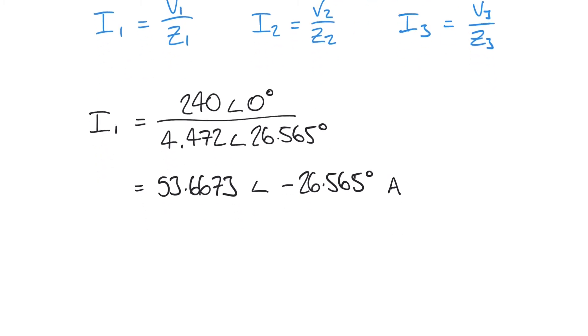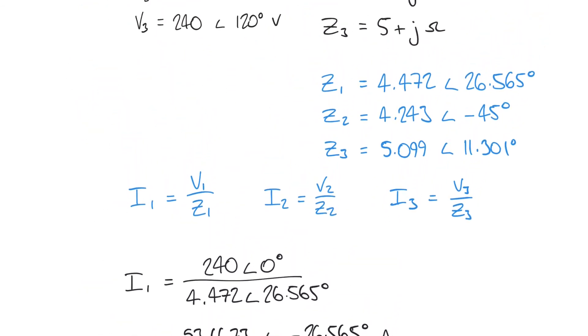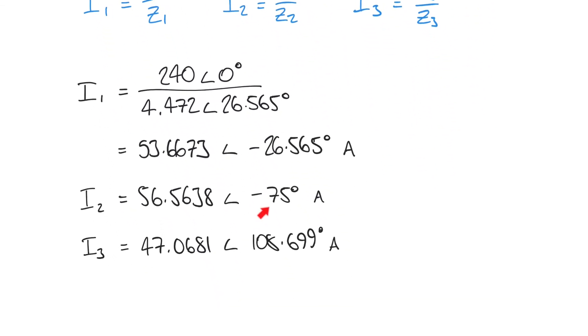Similarly, we can get I2 and I3 as being equal to 56.5638 at an angle of minus 75 degrees, and I3 equals 47.0681 at an angle of 108.699 degrees. Note when calculating I2, we've subtracted minus 120 minus minus 45, so that double negative becomes a positive, hence the minus 75 here. Just watch out for double negatives when the impedance already has a negative angle.